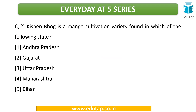The second question: Kishanbhog is a mango variety found in which state? Various states in India have mango cultivation, and different varieties are grown in different states. The answer here is Bihar — the mango variety cultivated in Bihar is Kishanbhog.